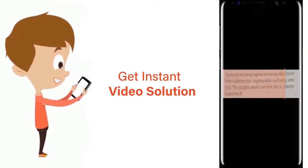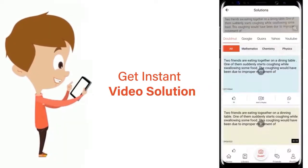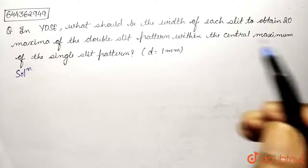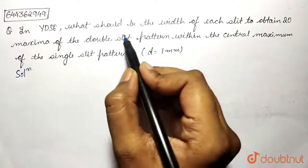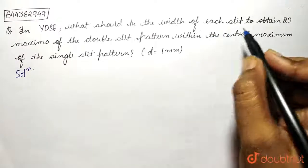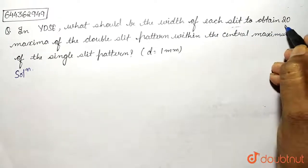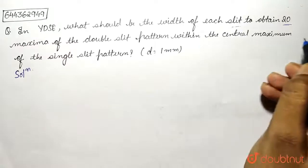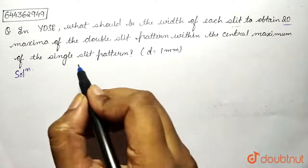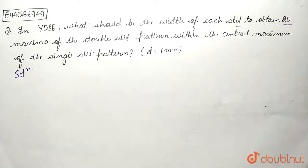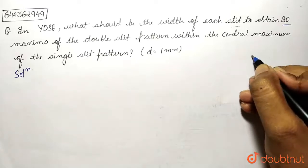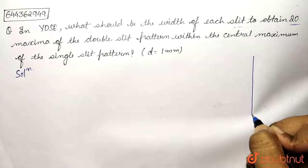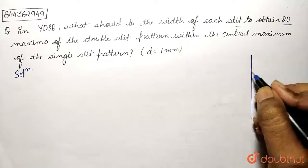Here the question says: in YDSE, what should be the width of each slit to obtain 20 maxima of the double slit pattern within the central maximum of the single slit pattern? Now, according to the question, let's draw a diagram.